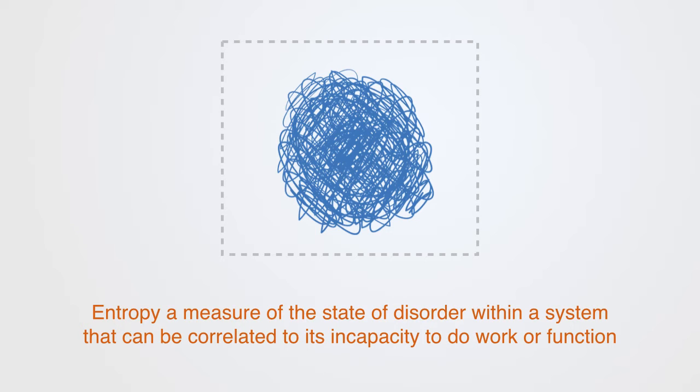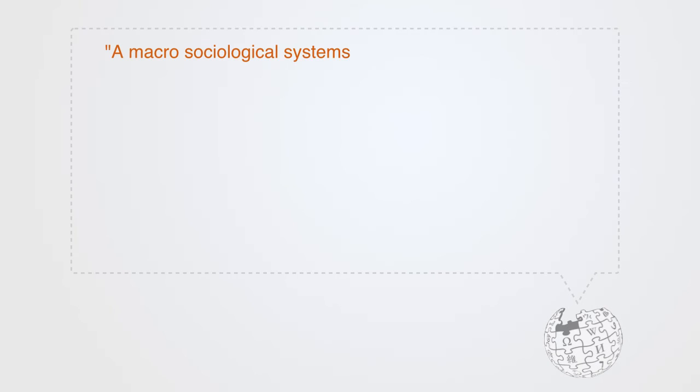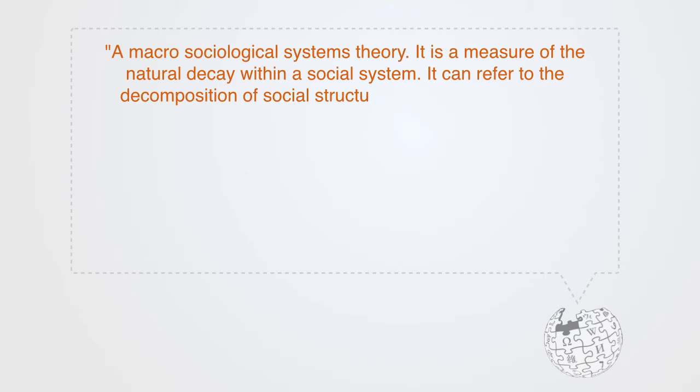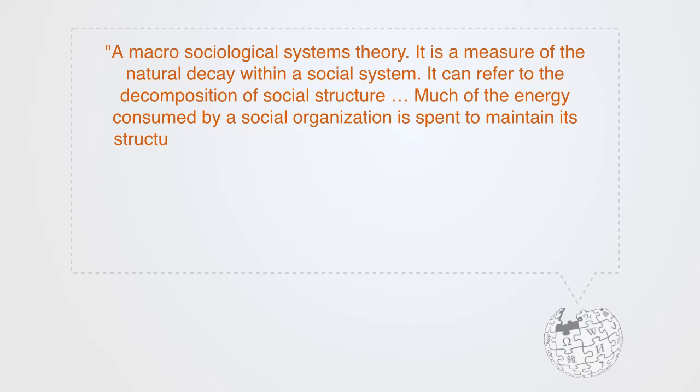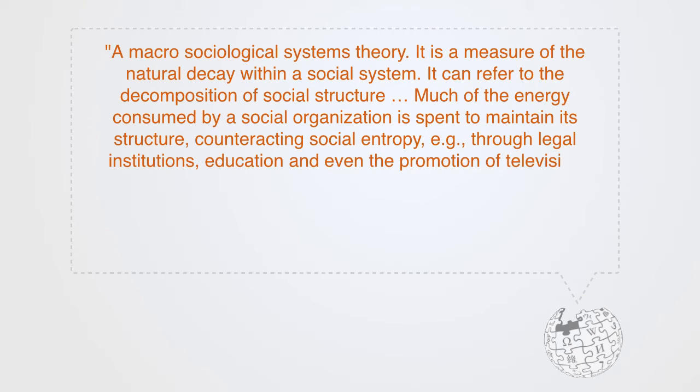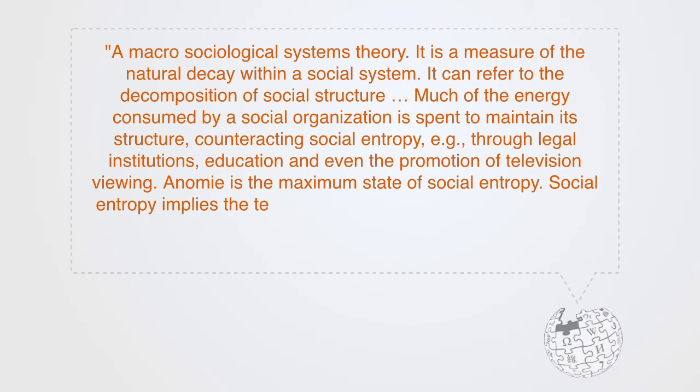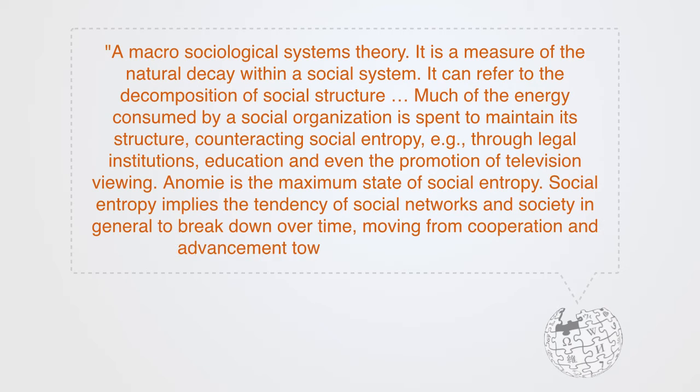Dysfunctionality within systems theory is called entropy, which is a measure of the state of disorder within a system that can be correlated to its incapacity to do work or function. According to Wikipedia, social entropy is a macro sociological system theory. It is a measure of the natural decay within a social system. It can refer to the decomposition of social structure. Much of the energy consumed by a social organization is spent on maintaining its structure, counteracting social entropy, through legal institutions, education, and even the promotion of television viewing. Anomie is the maximum state of social entropy. Social entropy implies the tendency of social networks and society in general to break down over time, moving from cooperation and advancement towards conflict and chaos.